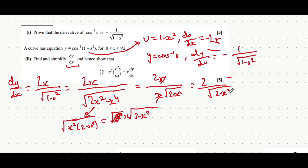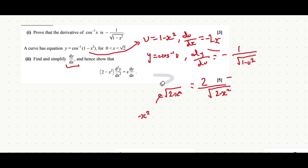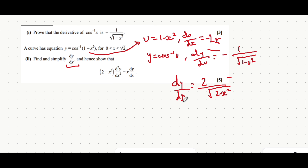Now you might be thinking that was quite a tedious process — did we need to do that? And actually for the next part of this question, you did need to do that. Now we know dy/dx equals this, we're also going to need d²y/dx². So let's find that by differentiating dy/dx.